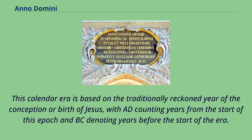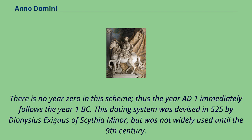This calendar era is based on the traditionally reckoned year of the conception or birth of Jesus, with AD counting years from the start of this epoch and BC denoting years before the start of the era. There is no year zero in this scheme; thus the year AD 1 immediately follows the year 1 BC. This dating system was devised in 525 by Dionysius Exiguus of Scythia Minor, but was not widely used until the 9th century.